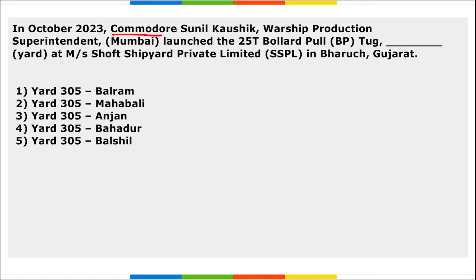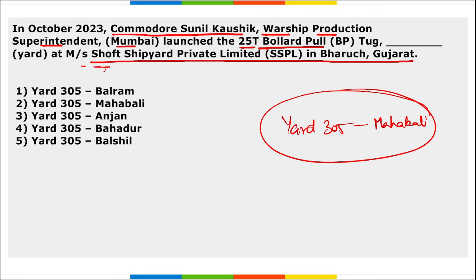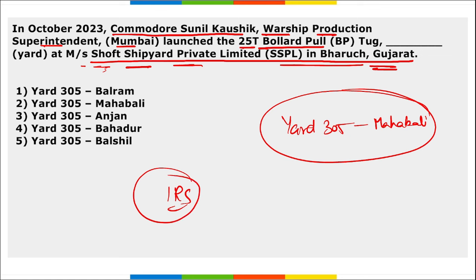Commander Sunil Kaushik, Warship Production Superintendent of Mumbai, launched Yard 305 Mahabali — a 225-tonne Bollard Pull Tug — at M/S Shoft Shipyard Private Limited in Bharuch, Gujarat. These tugs are built under Indian Register of Shipping classification rules and will improve operational commitment of Indian Navy by facilitating assistance to naval ships and submarines, providing firefighting assistance, and conducting limited search and rescue operations.